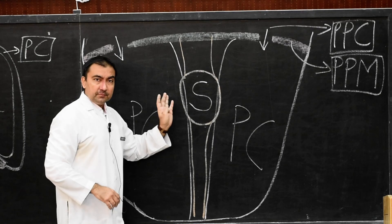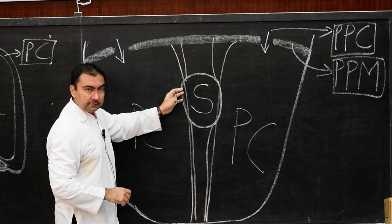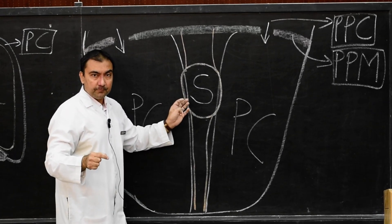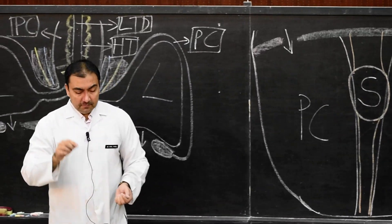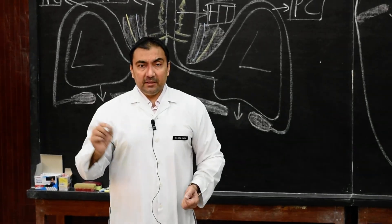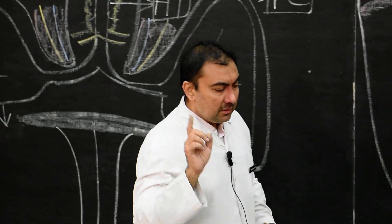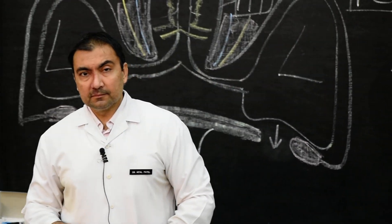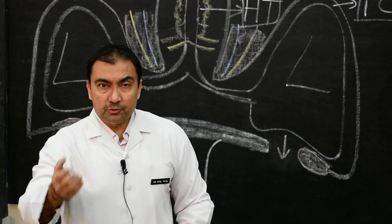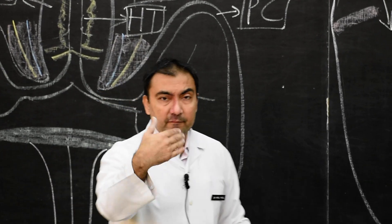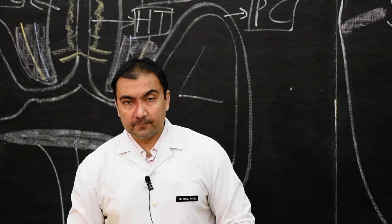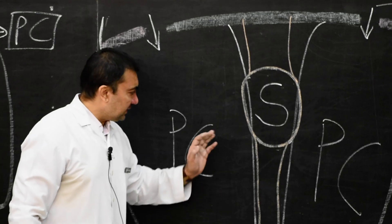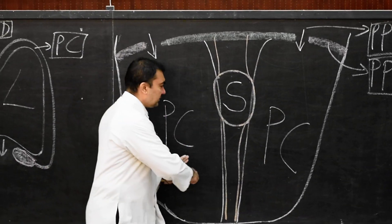We will add two features here for the development of the lesser sac. Note down the points in sequence. First point: there will be development of dorsal mesentery and ventral mesogastrium, which will attach the primitive gut tube to the dorsal abdominal wall and ventral abdominal wall respectively. Second point: because of the attachment of dorsal mesentery, the entire peritoneal cavity is divided into right and left halves.